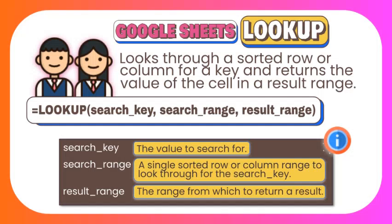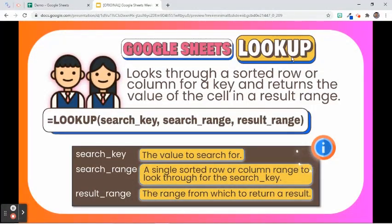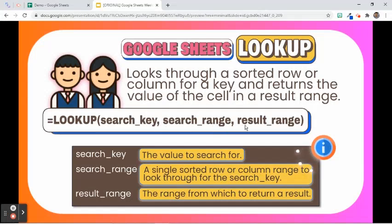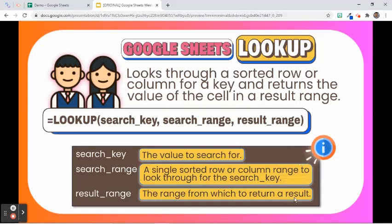The third function we will talk about is LOOKUP. Compared to the previous two, this function is more flexible. It looks through a sorted row or column for a key and returns the value of the cell in a result range located in the same position as the search row or column. The syntax is: =LOOKUP(search_key, search_range, result_range). The search key is the value to search for. The search range is a single sorted row or column to look through. The result range is the range from which to return a result, corresponding to the location where search key is found in search range.